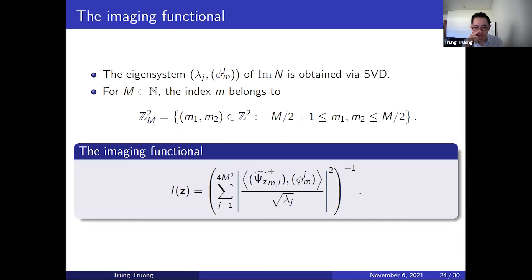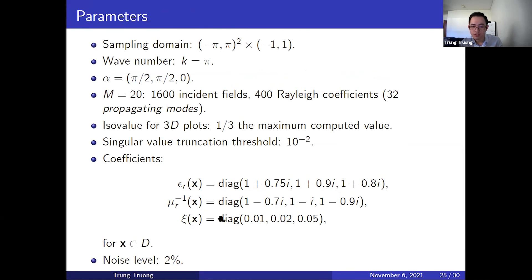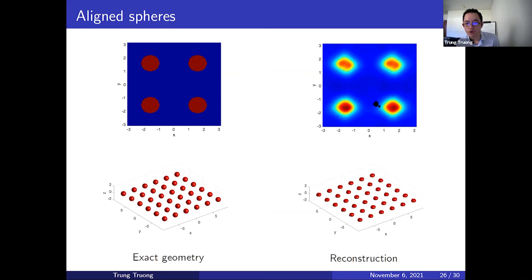Now we show briefly some numerical examples to see how the method performs. We computed the eigen-system using SVD, and since we can only compute a finite number of terms in the series on a computer, we used the reciprocal of a truncated series instead of the full series. Here is the list of parameters — importantly, this is an example of parameters satisfying the assumptions made earlier. We also use 2% noise in the data.